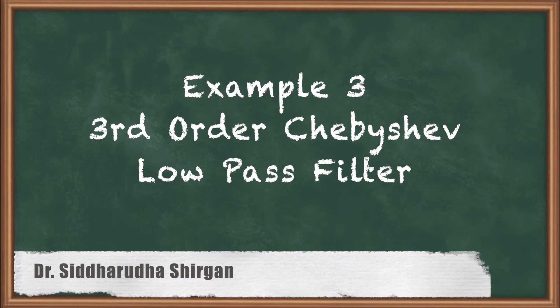Hello friends. In the previous video, we designed an equal ripple low pass filter for 3 dB ripples. We know that there are two ripples: one is 3 dB ripple and second is 0.5 dB ripple.